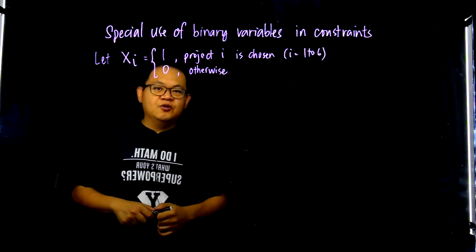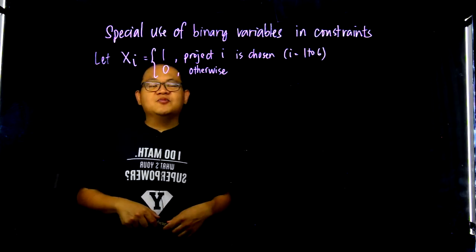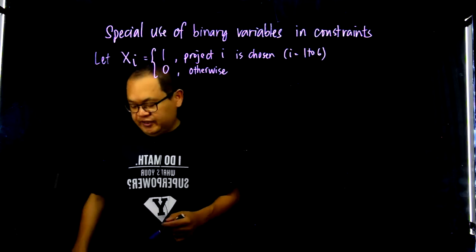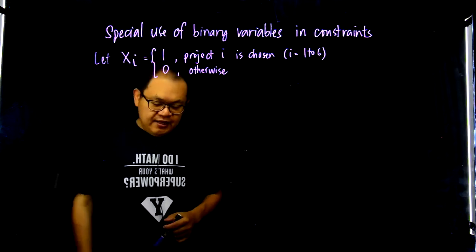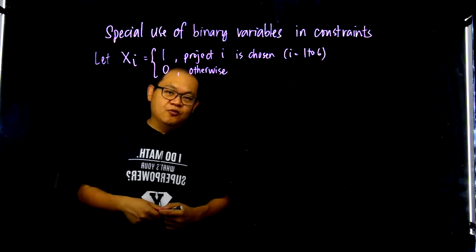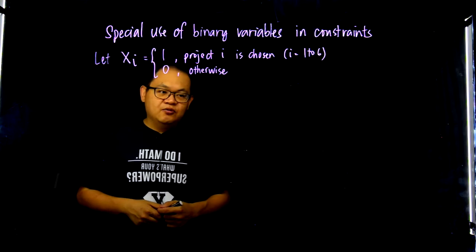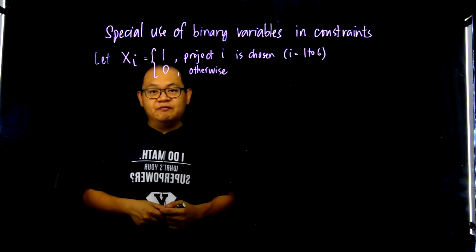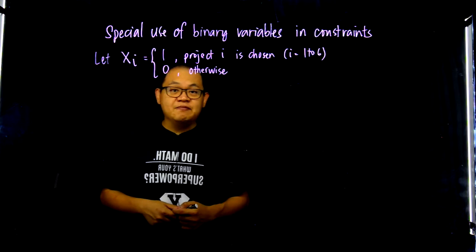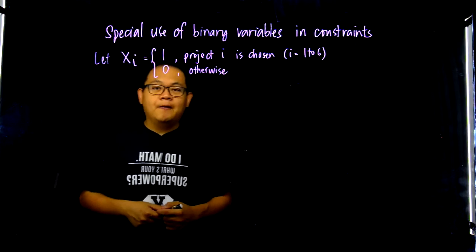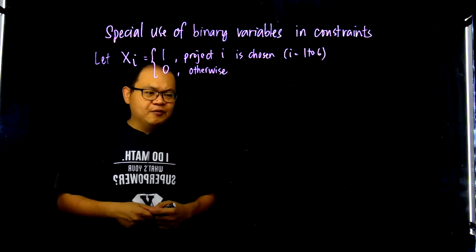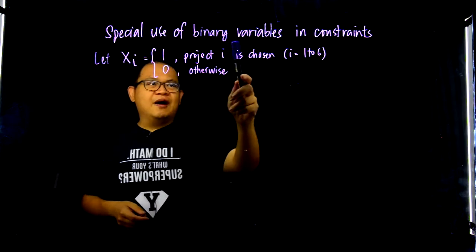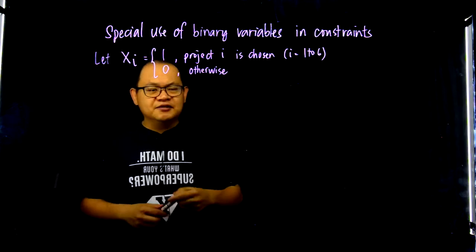Hello. For this video, we will be talking about special uses of binary variables in our constraints. In the previous video, I was able to show you how to define binary variables and use them in the matchmaking problem. And in that problem, I was able to give you a snippet of how to use binary variables in constraints.